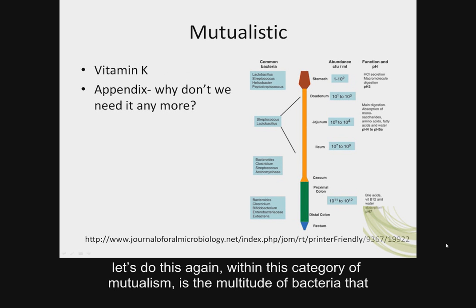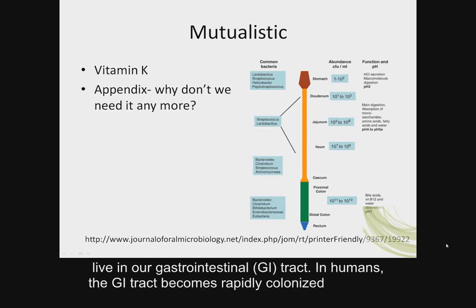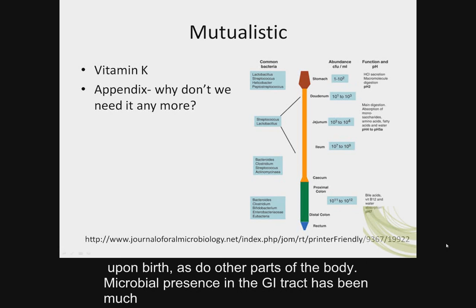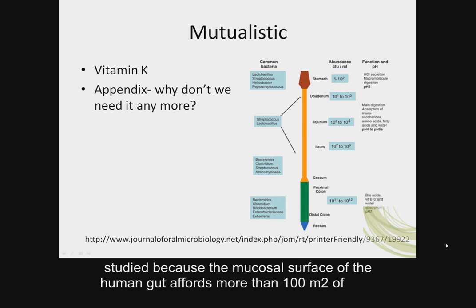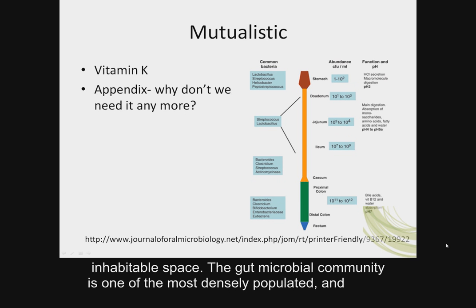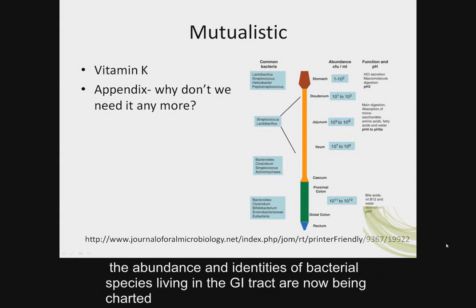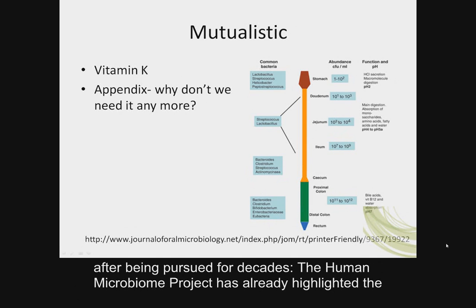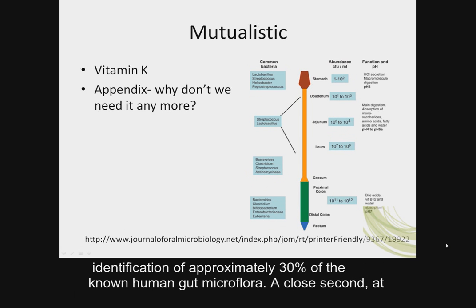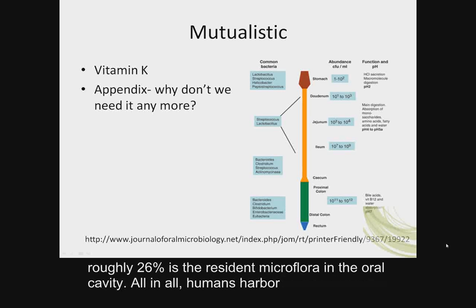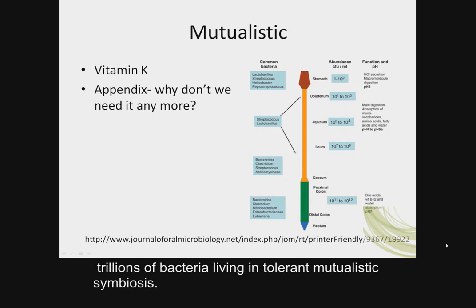The multitude of bacteria living in our gastrointestinal tract represent mutualism. In humans, the GI tract becomes rapidly colonized upon birth, as do other parts of the body. The mucosal surface of the gut affords more than 100 meters squared of inhabitable space, making the gut microbial community one of the most densely populated. The Human Microbiome Project has highlighted the identification of approximately 30% of the known human gut microflora. A close second, at roughly 26%, is the resident microflora in the oral cavity. All in all, humans harbor trillions of bacteria living in tolerant mutualistic symbiosis.